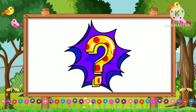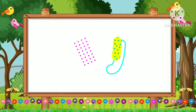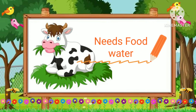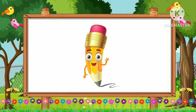Let's see what are the qualities of living things which make them different from the non-living things. Living things need food and water to survive, and they breathe air, while the non-living things don't need any food.